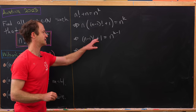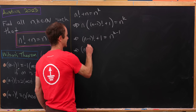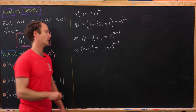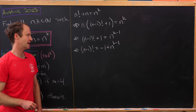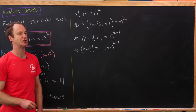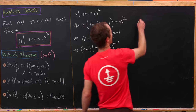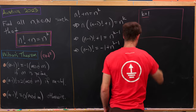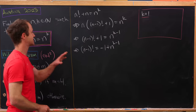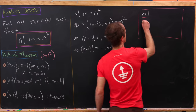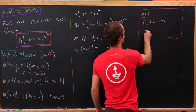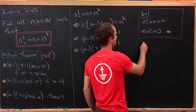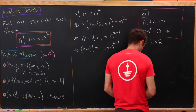Moving the 1 to the right-hand side gives (n-1)! = -1 + n^(k-1). Reducing mod n — assuming k ≥ 2 — let's first check k=1: if k=1 then n! + n = n, meaning n! = 0, which gives no solution. So we can indeed assume k ≥ 2.